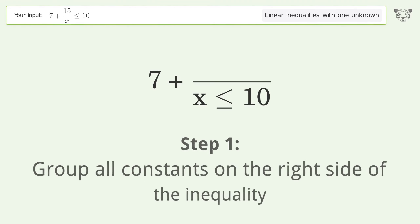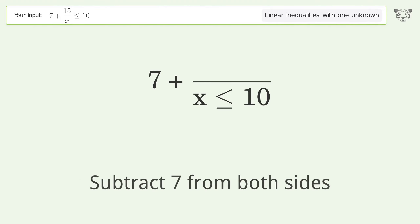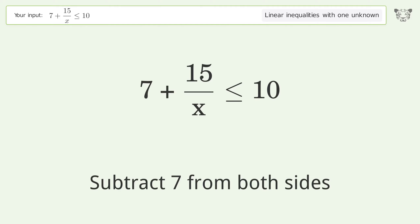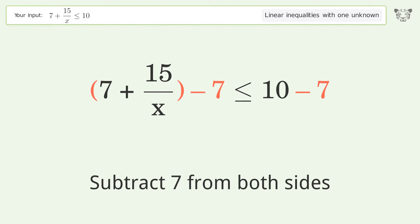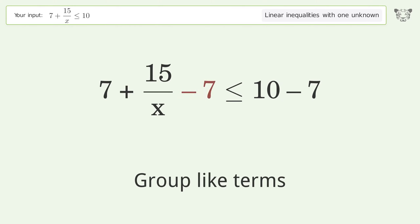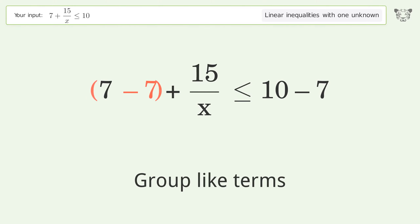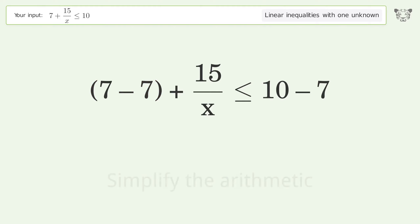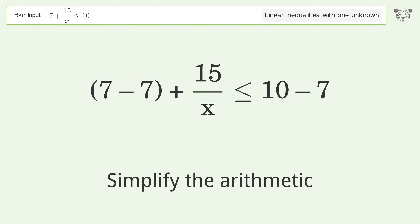Group all constants on the right side of the inequality — subtract 7 from both sides. Group like terms. Simplify the arithmetic.